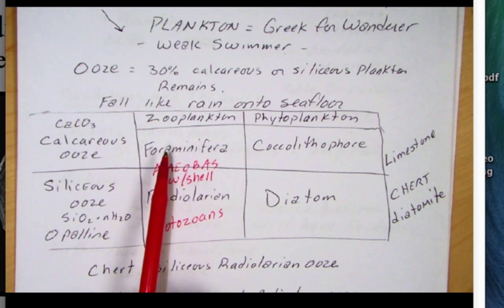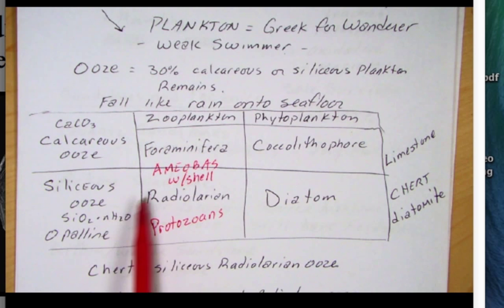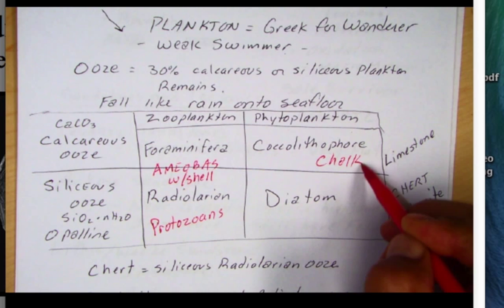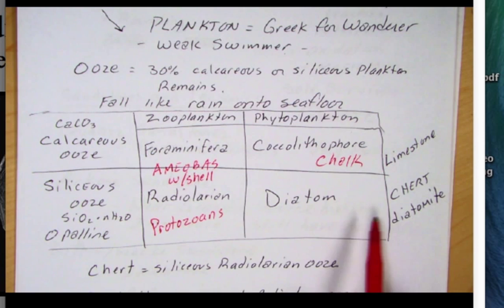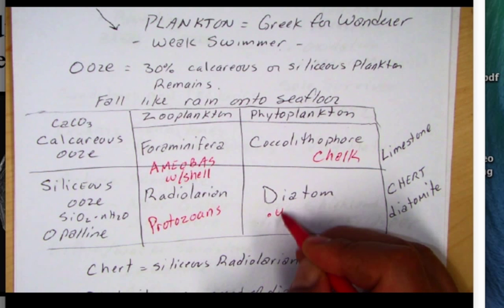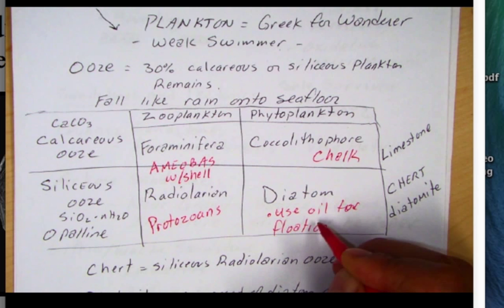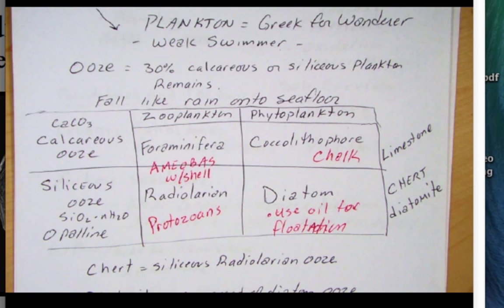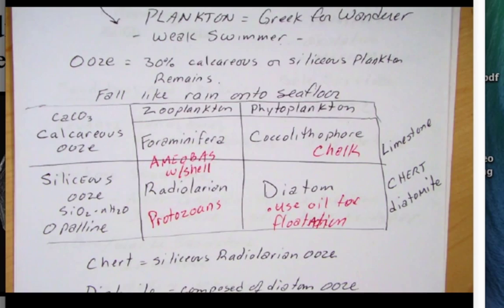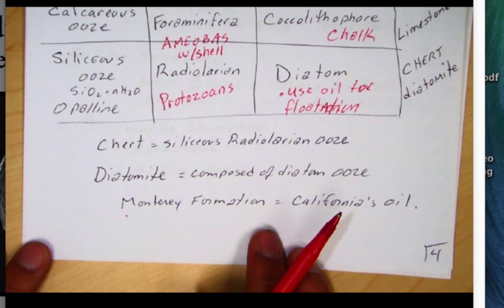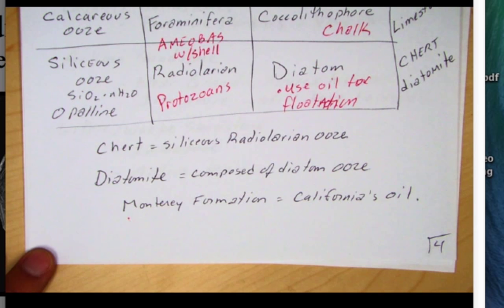For the phytoplankton, cocolithophores make their shells out of calcium carbonate and primarily make the rock called chalk, whereas diatoms make a rock called diatomite. Because diatoms are photosynthetic, they use oil for flotation, and that oil eventually forms oil deposits — diatoms are a big source of California's oil. The famous formation here in California is called the Monterey Formation, well-exposed from Point Reyes Peninsula all the way down to the Los Angeles Basin, and it is the source of California's oil.